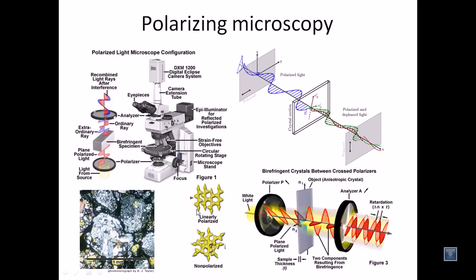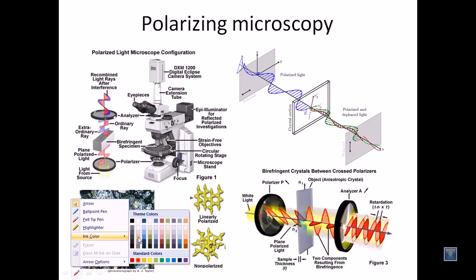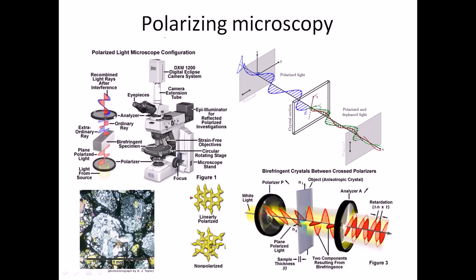As the name suggests, polarizing microscopy is a part of light microscopy — we are using light as the illuminating source. We illuminate our specimen with light, but not general light; we are creating and using polarized light to illuminate our sample. That is why it is called a polarizing microscope.